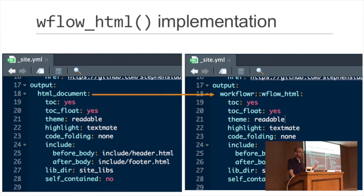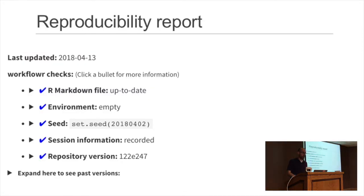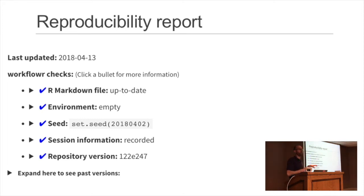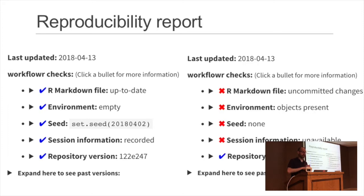Because it's built on top of the HTML document output format shipped with R Markdown, you just have to change one line in your site.yaml file and all your other settings are unchanged. It also adds a reproducibility report to the top of the document, which checks various things important for reproducibility. If you click on any bullet point, it'll explain why it's important. And if you fail some reproducibility checks, it'll give you a red X, tell you why it failed, and how to fix it.